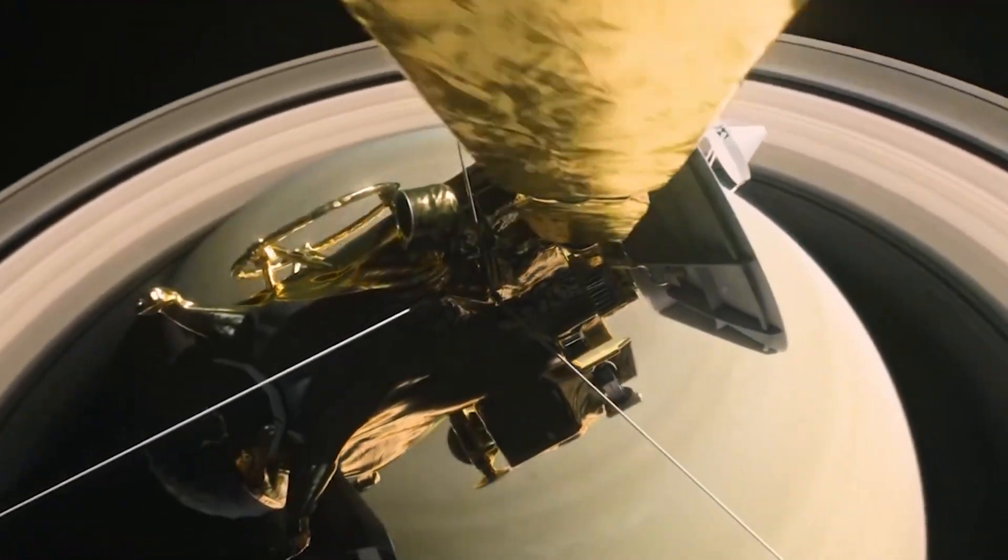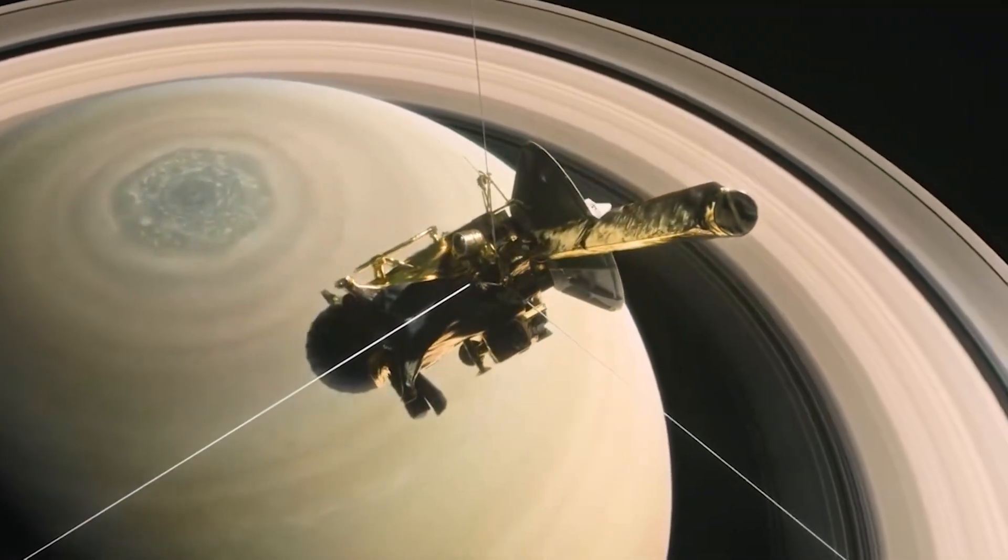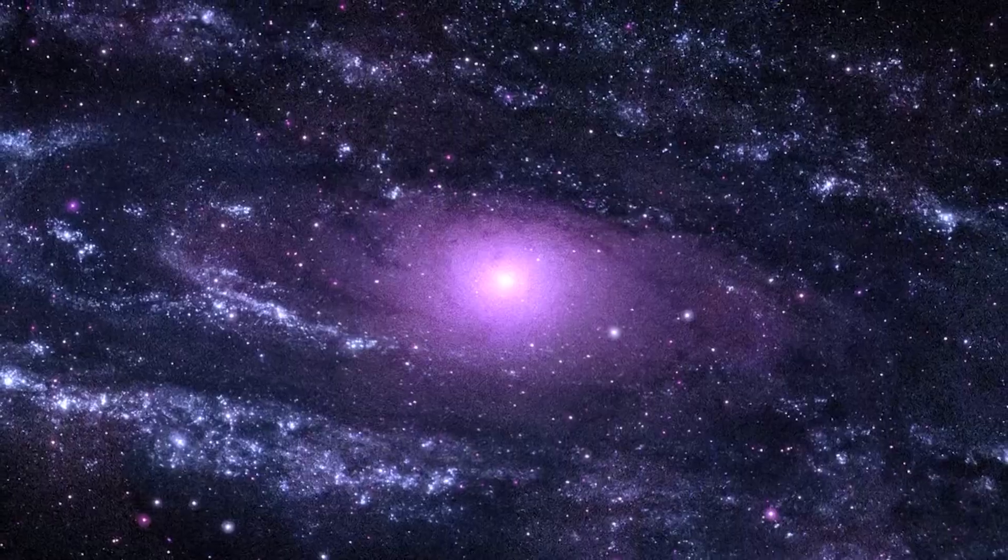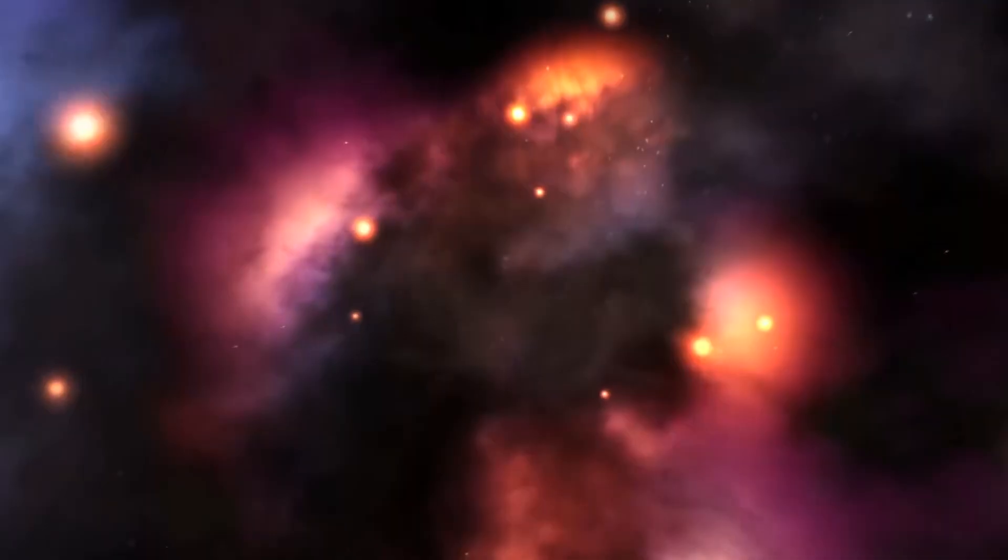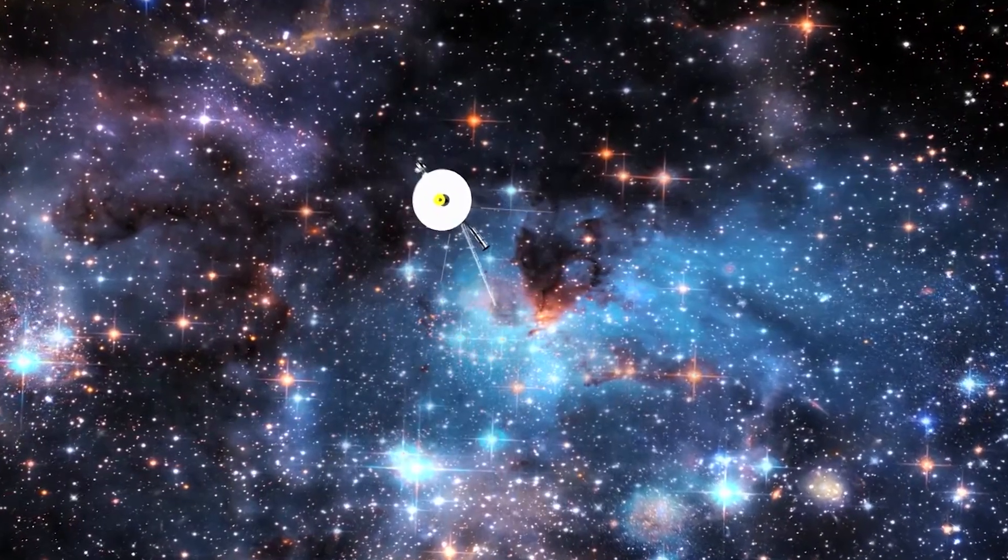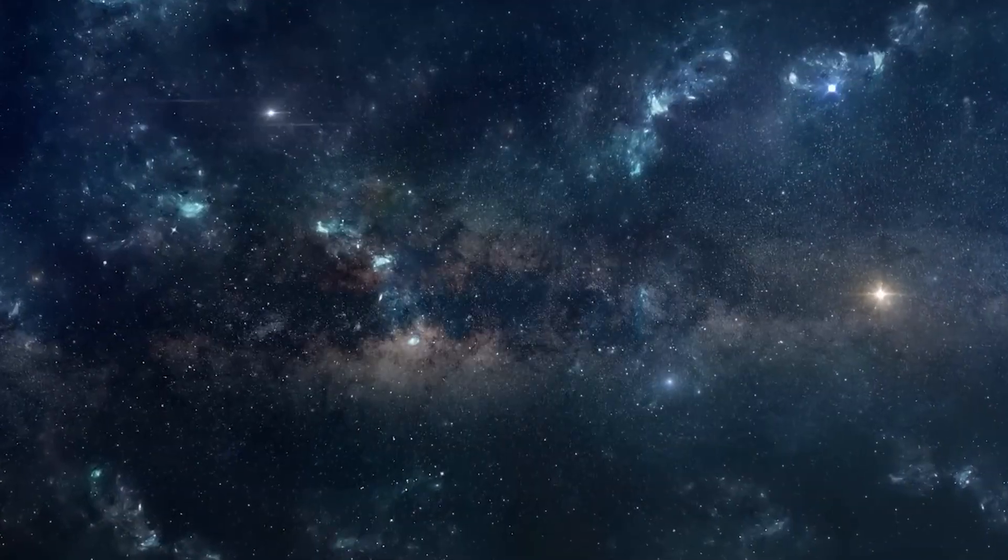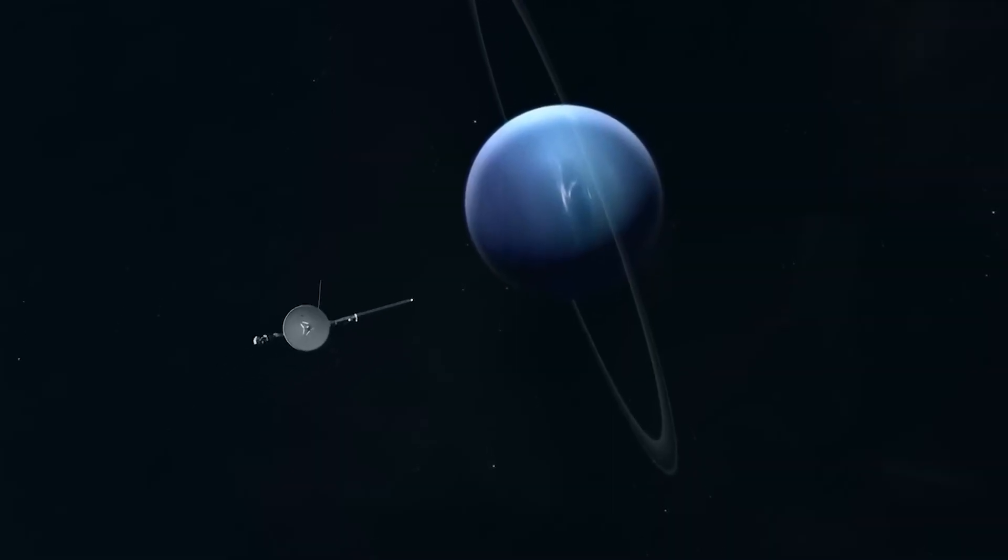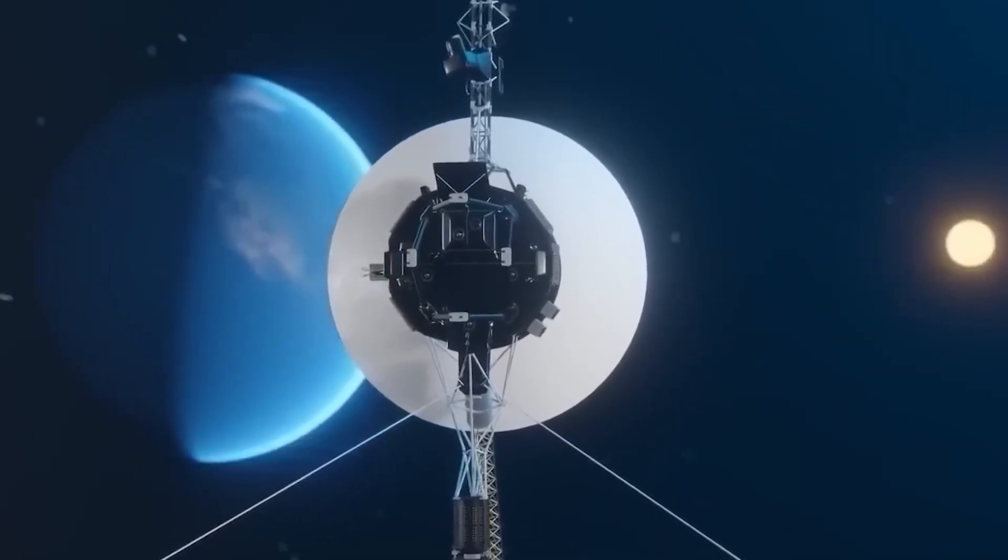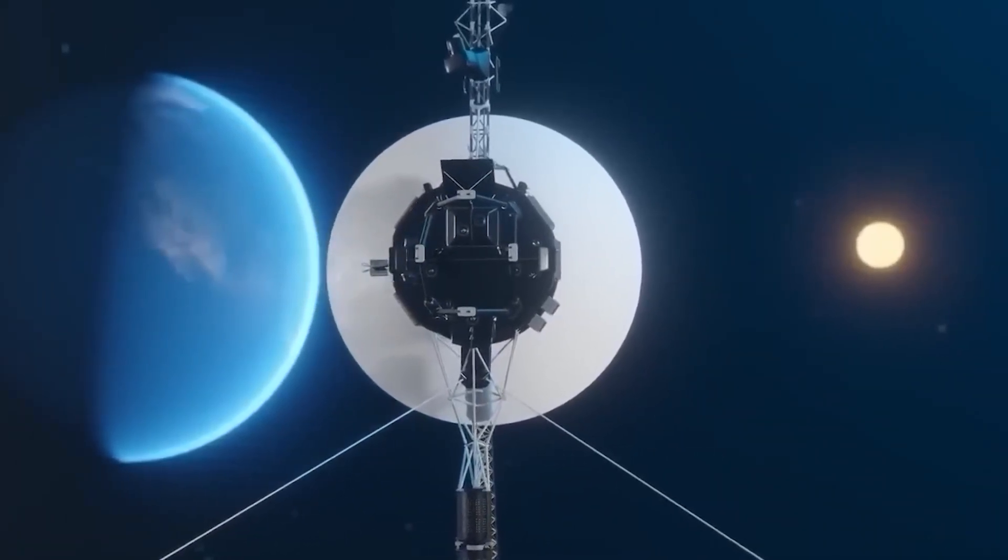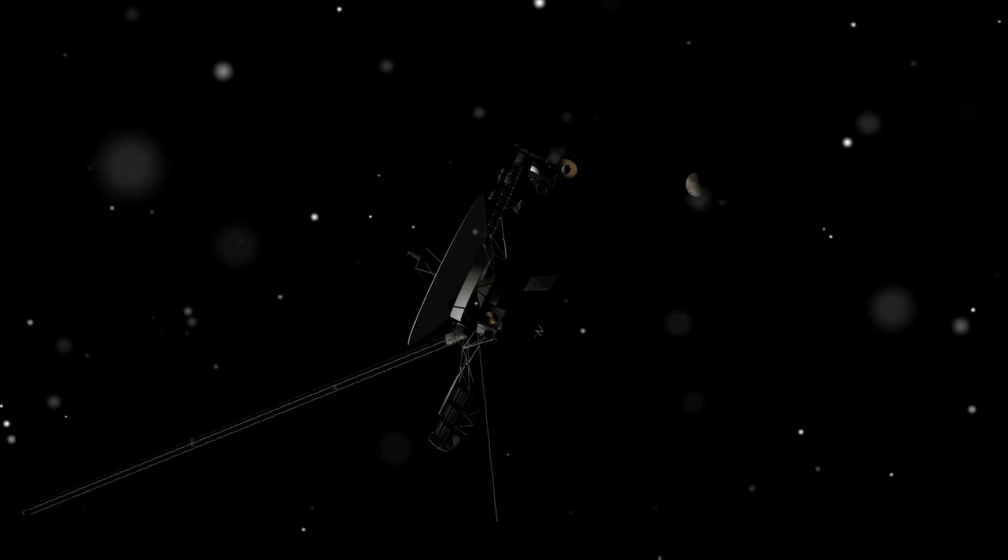Moreover, Voyager 2's journey reveals how much more there is to explore beyond the solar system. It has now become a pioneer not just of space exploration, but of a new kind of science: the direct investigation of interstellar space. Its discoveries mark the first steps into a realm that no spacecraft has ever navigated before. The fact that it is still functioning, still sending back data from over 12 billion miles away, makes its observations all the more remarkable. With every signal, it stretches the limits of what humanity can perceive and understand, reaching into regions that were once purely theoretical.